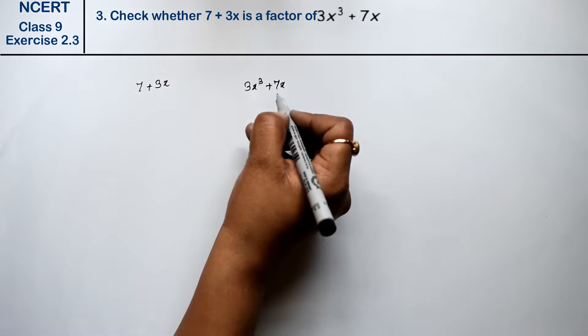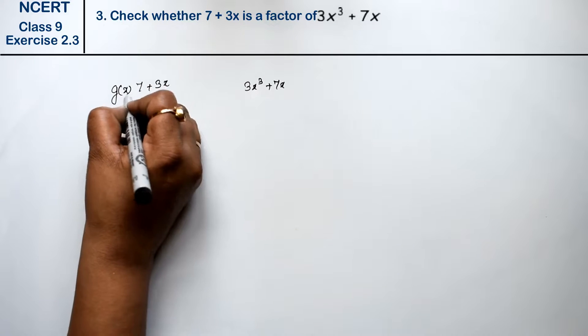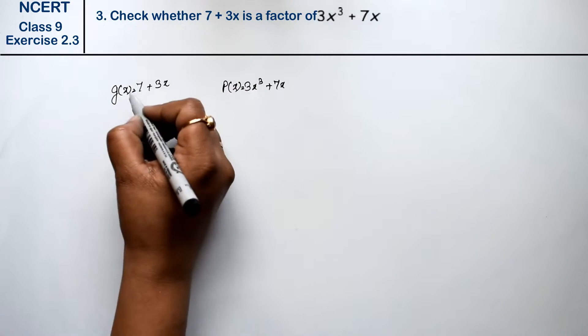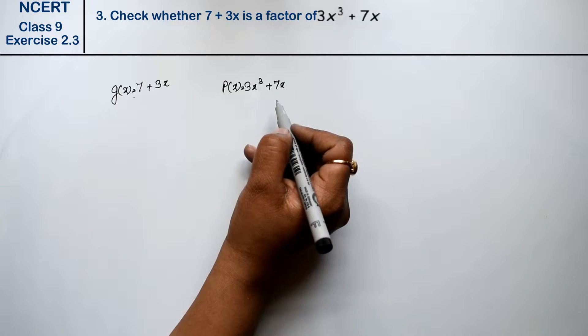This is not the factor. It means this is our g(x) and this is our polynomial p(x). What do we do for this factor?